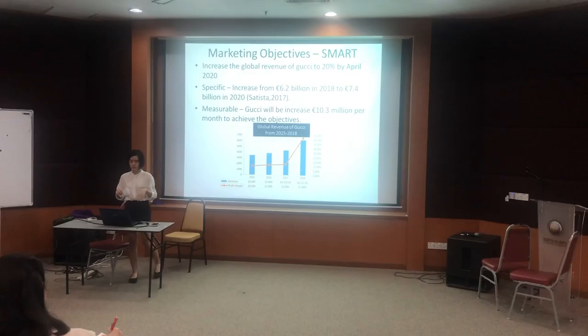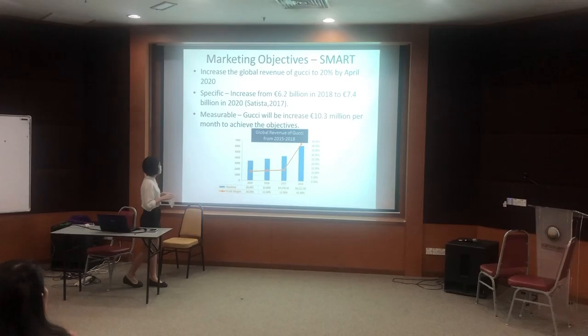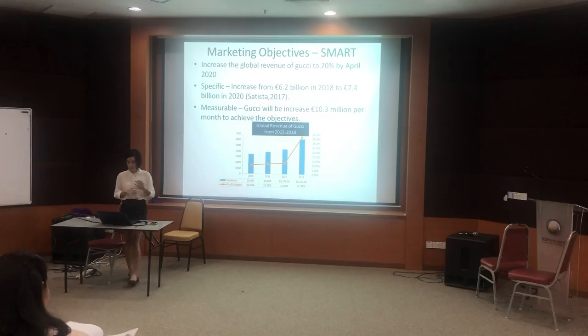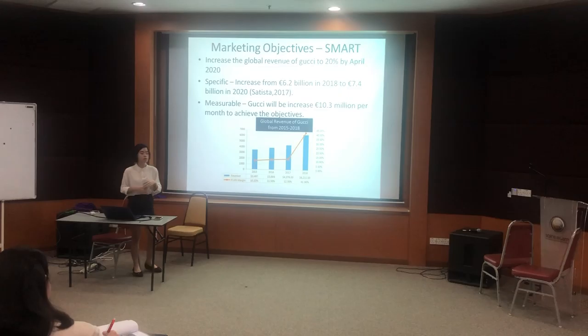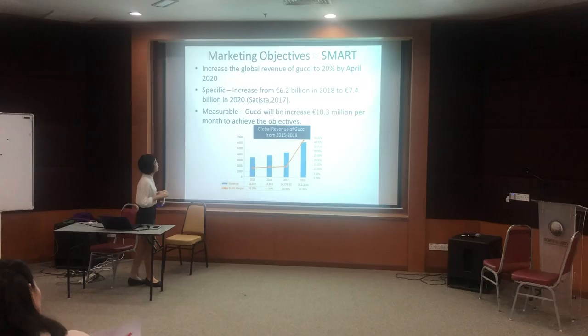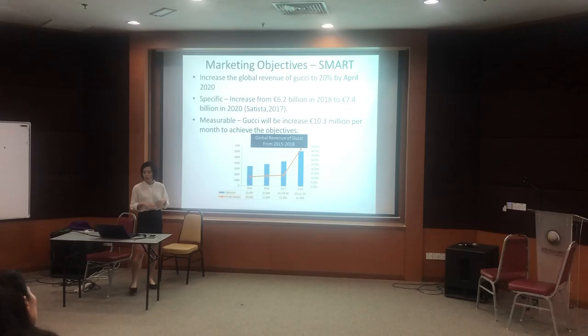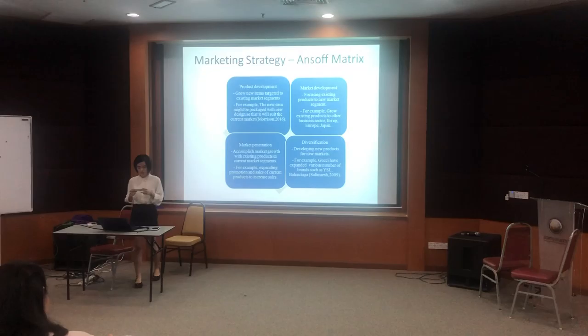The marketing objective must be specific, measurable, achievable, realistic, and time-bound. Gucci's objective would be to increase the global revenue of Gucci by 20% by April 2020. According to the graph, the global revenue has been increasing every year from 2010 to 2018, and the profit margin increased from 10.2 to 41.9. It is specific enough to increase from 6.2 billion pounds in 2018 to 7.4 billion pounds in 2020, and it will be measurable to increase by 10.3 billion pounds per month to achieve the objective.